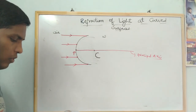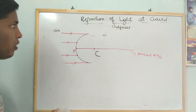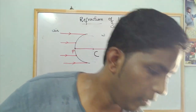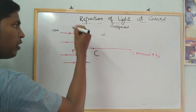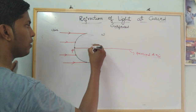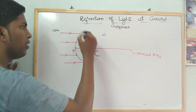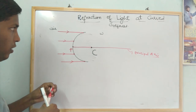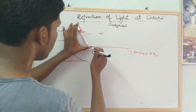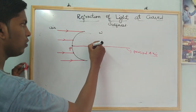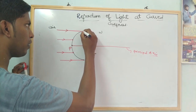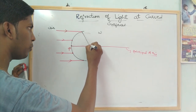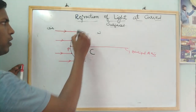Now see here — suppose I draw a line from the center of curvature to this point on the curved surface. I am drawing the line from the center of curvature to this point.